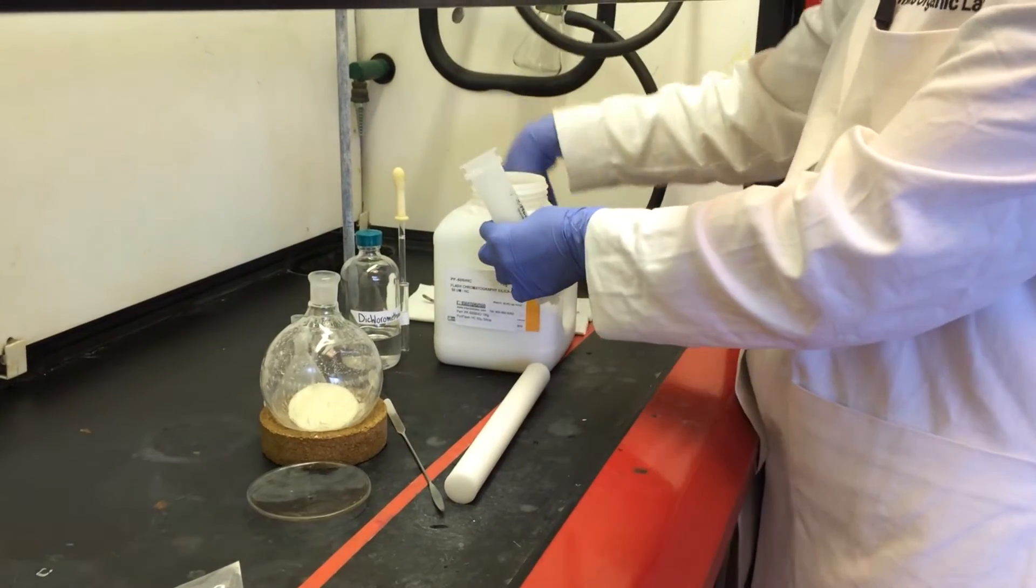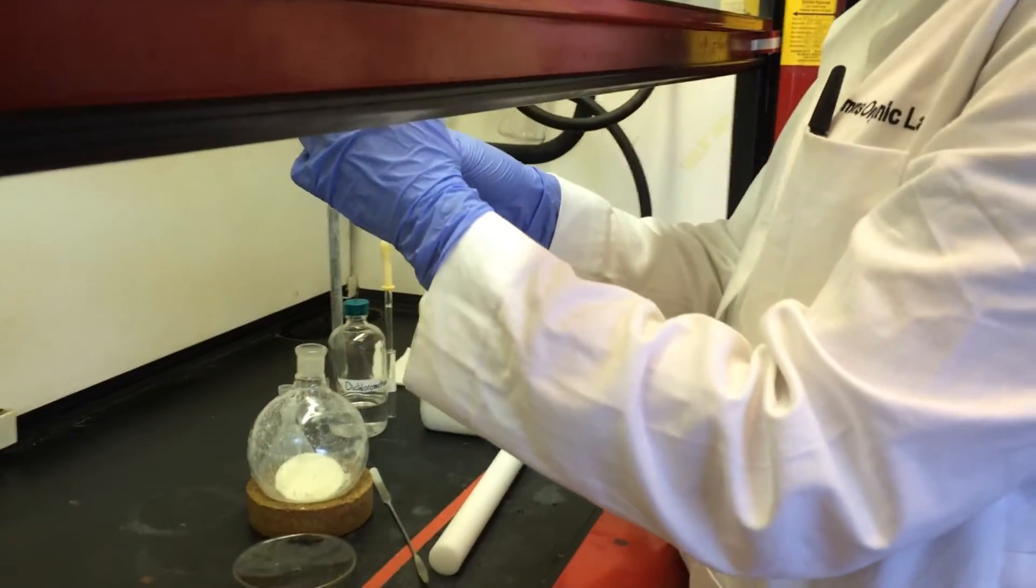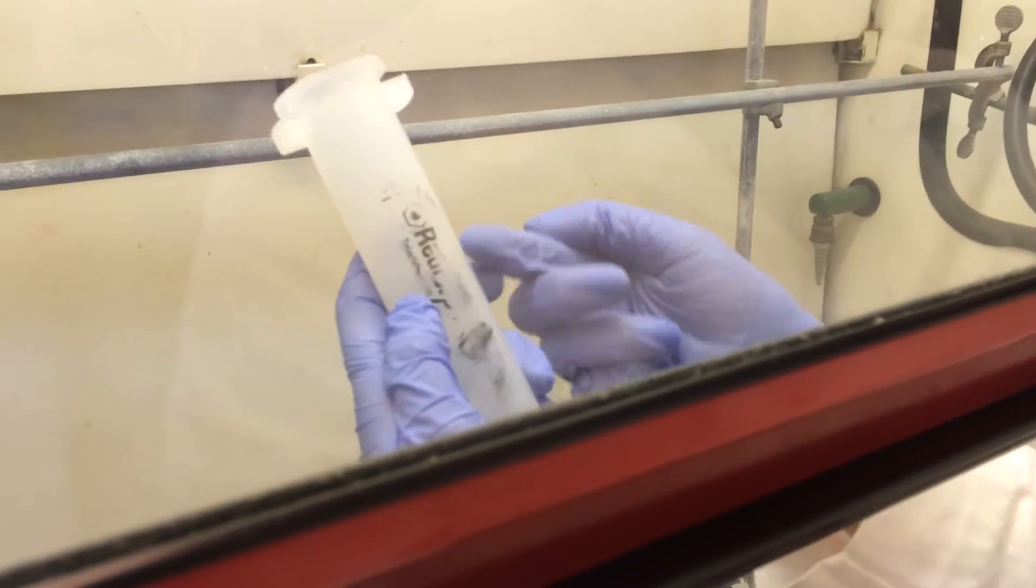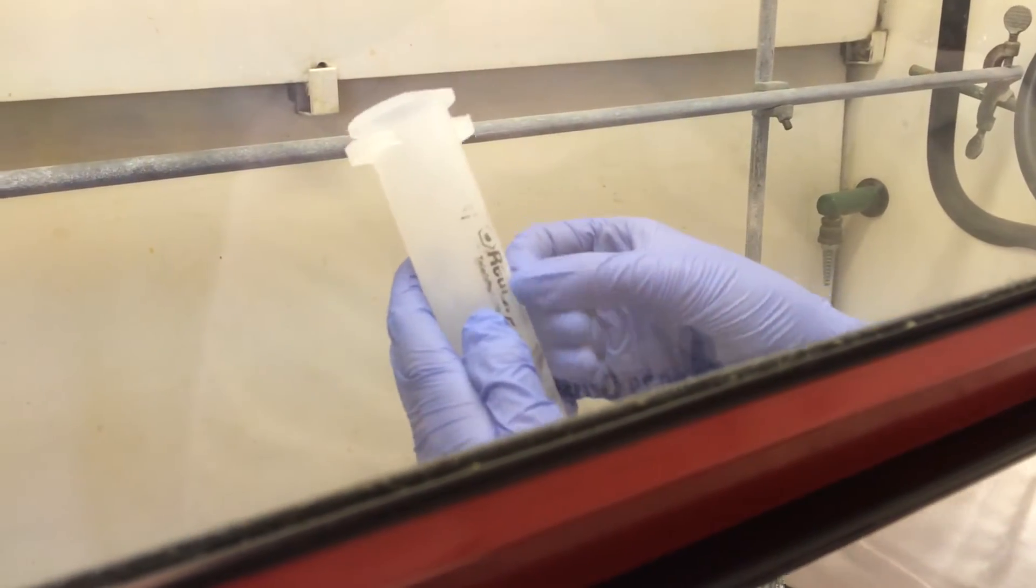Next, you pour in some silica gel until about halfway. Normally, it will be between the I and the S. This cartridge is missing some of the letters, but normally it will be between the I and the S.